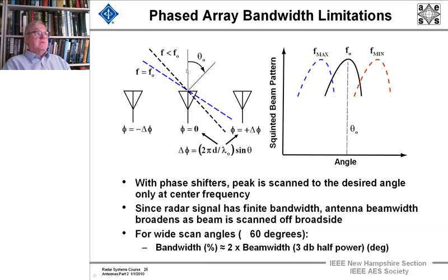And so the beam is going to shift. Notice that the phase shift depends on lambda. Lambda depends on the frequency. So you're going to have a shifting, you're going to have a squinted beam pattern when you change frequencies over the center frequency that you operate at. And for wide scan angles of approximately 60 degrees, the bandwidth percentage is about twice the 3 dB beam width.